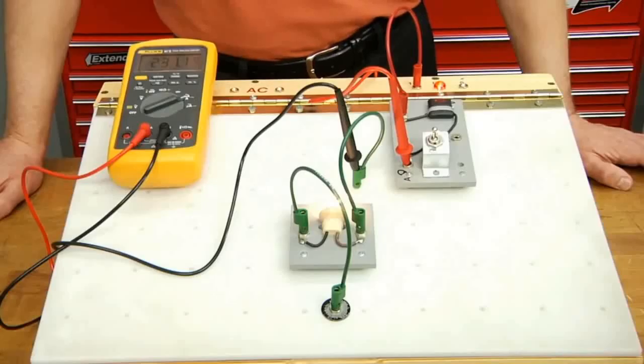Hopefully, this demonstration has helped to show you the proper way to measure amperage in a circuit. Thanks, David. Remember, when testing amperage, the meter is hooked up in series and the circuit should be operating. If the circuit does not operate, your meter might not be hooked up correctly. Thanks for watching.